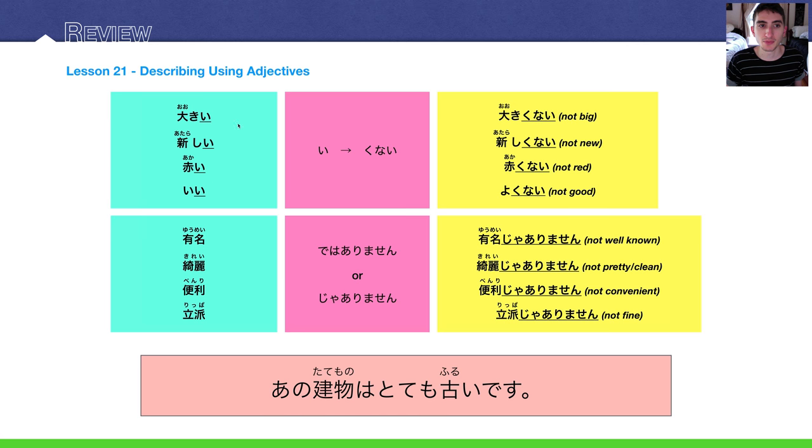To conjugate, by the way, these are i adjectives. They all end in ii. And to conjugate i adjectives, you take the final ii and change it to kunai. So ookii becomes ookikunai. Atarashii, atarashikunai. Akai, akakunai.